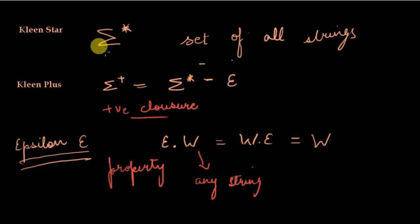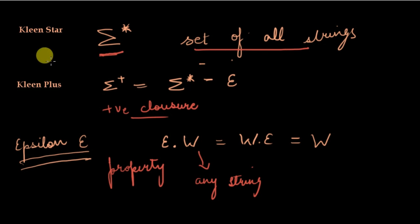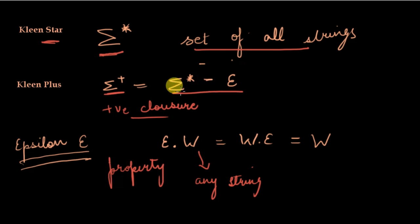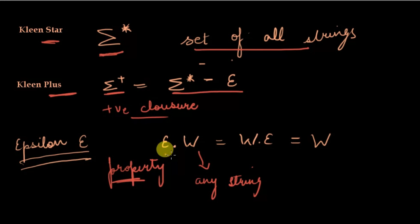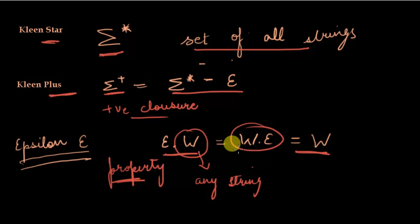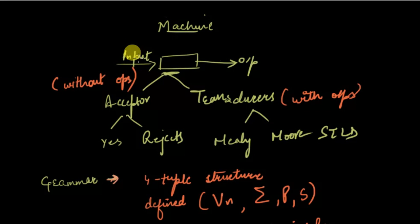In the previous video I forgot to mention that sigma star, which we know as the set of all strings, is called Kleene star, and the positive closure, which we know as sigma plus — that is the universal closure minus epsilon — is known as Kleene plus. There is a property of epsilon that when it is concatenated with any string, in any order, it gives back the same string.